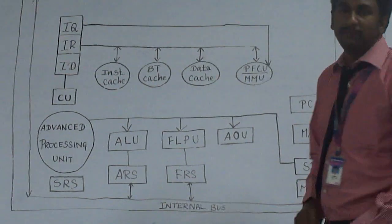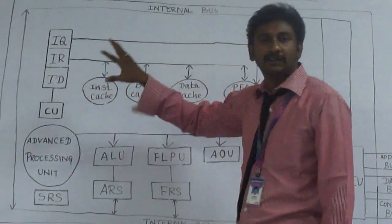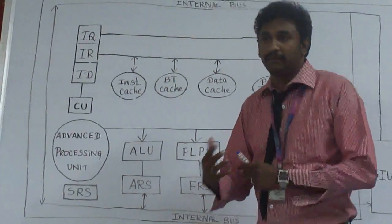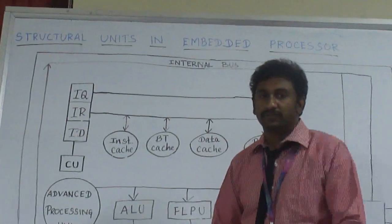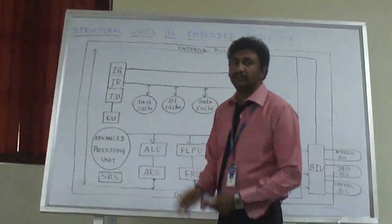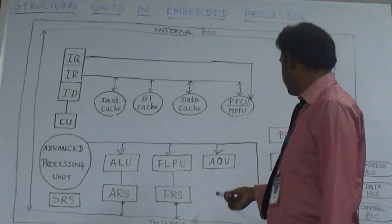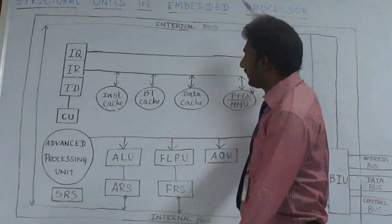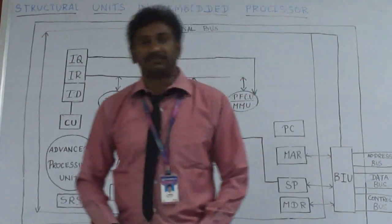And MMU is the Memory Management Unit. It manages the whole memory of the processor — it may be allocating memory for data, or allocating memory for instructions, or allocating memory addresses for processes. Everything related to memory is managed by the Memory Management Unit. All of this comes under the category of the structural unit in the embedded processor.